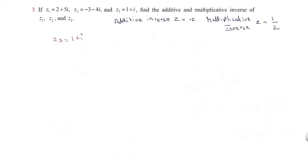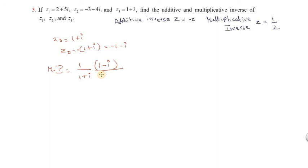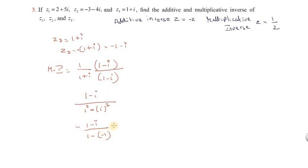For Z3, the additive inverse is equal to minus Z3, so minus half of (1 plus i), giving minus half minus half i. The multiplicative inverse: MI equals 1 by (1 plus i). Multiply conjugate 1 minus i with numerator and denominator. The denominator is a plus b into a minus b, so a squared minus b squared: 1 squared minus i squared equals 1 minus of minus 1, which is 1 plus 1 equals 2. So the answer for the multiplicative inverse of Z3 is 1 by 2 into (1 minus i). Thanks friends.